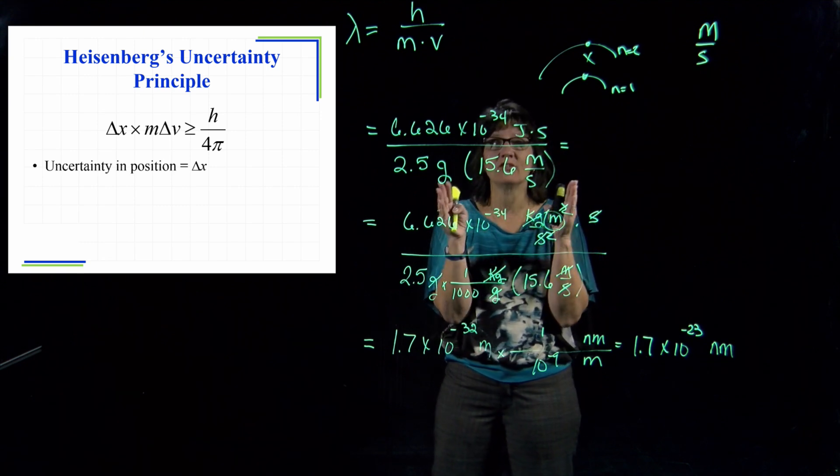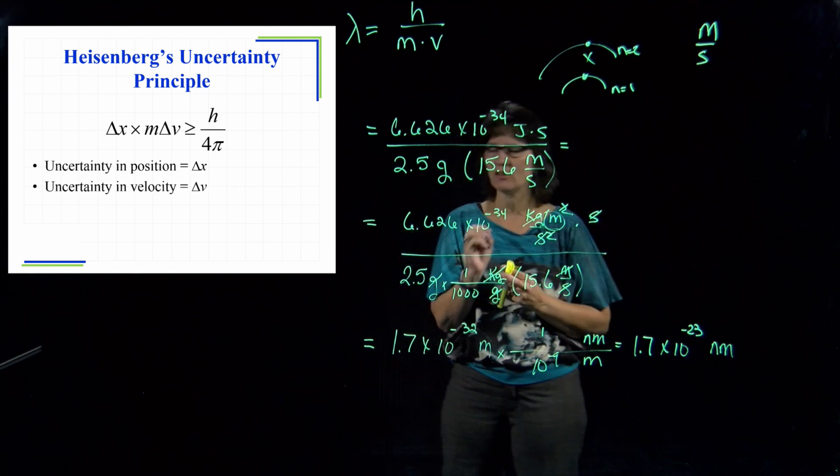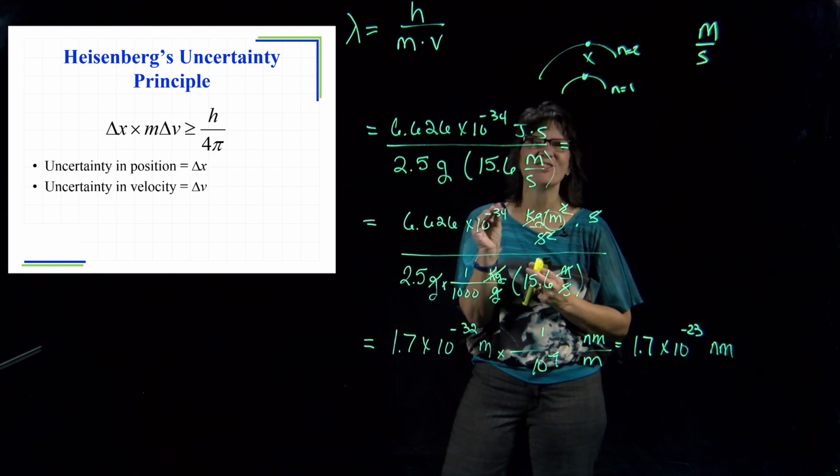So as that number gets smaller, as the uncertainty gets smaller and smaller, that delta x gets smaller and smaller. The next delta that we see is a delta v—that is the uncertainty in its velocity. Now why is this important?